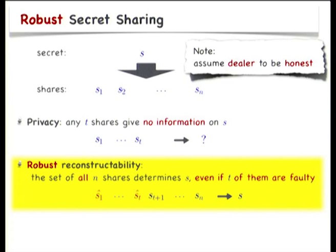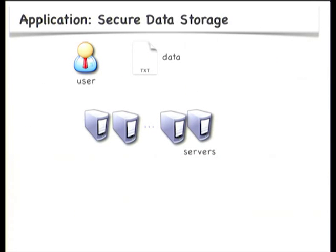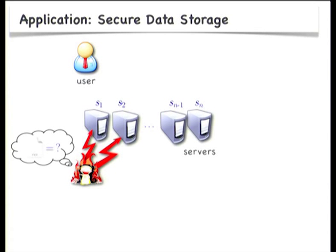An immediate application of robust secret sharing is to secure data storage. With a robust secret sharing scheme, a user can store sensitive data on a set of servers so that if up to t of the servers are corrupt, no information is leaked to the adversary, and whenever he wants, the user can recover the data from the servers, even if the corrupt servers provide rubbish.